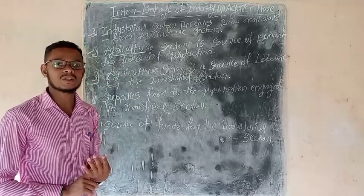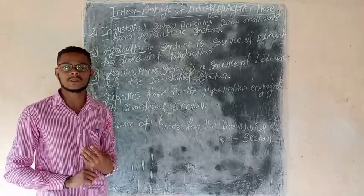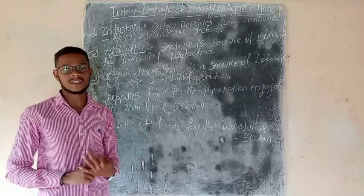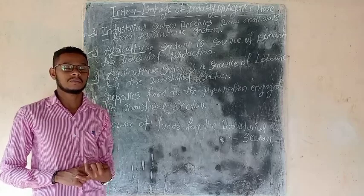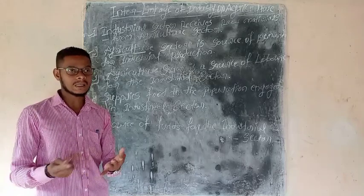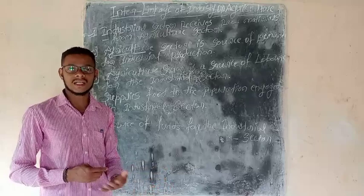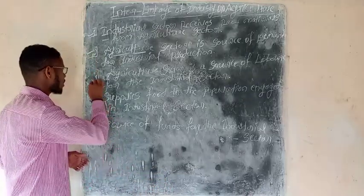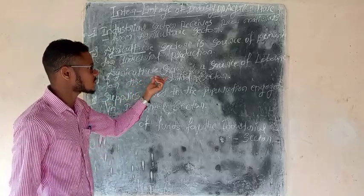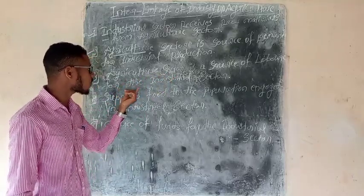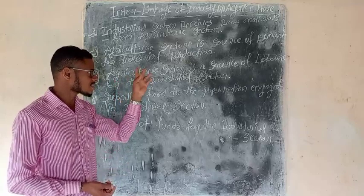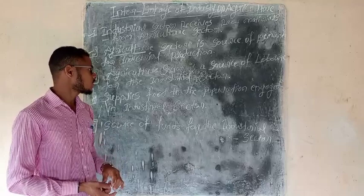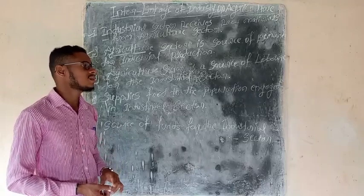For example, we have vehicles, bikes, machines, and other materials. The agriculture sector is also a source of demand through the supply chain. The agriculture sector is the source of labor for the industrial sector.